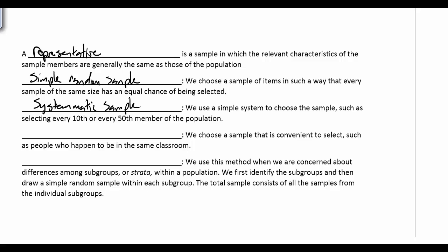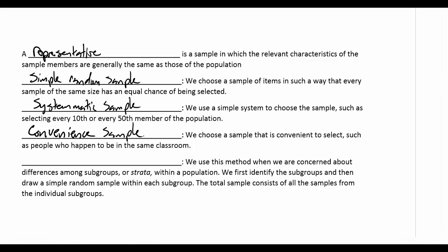The next method is called a convenience sample. A convenience sample is when we're just kind of lazy — we do what's convenient. We just kind of ask people near us. We might ask our friends or relatives and base our conclusions off that. We might go to the mall and only talk to people that look friendly and look like they'll actually respond to us.